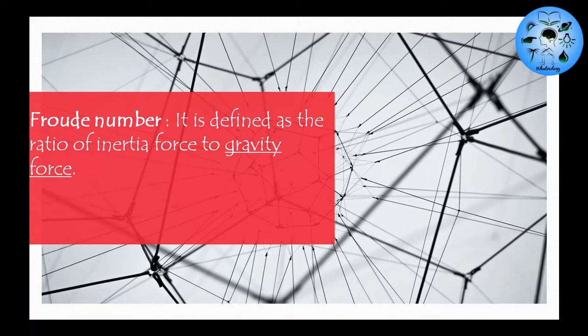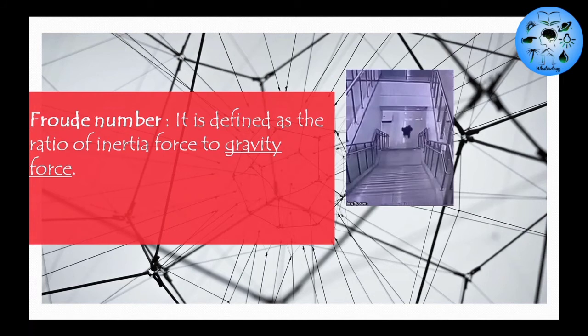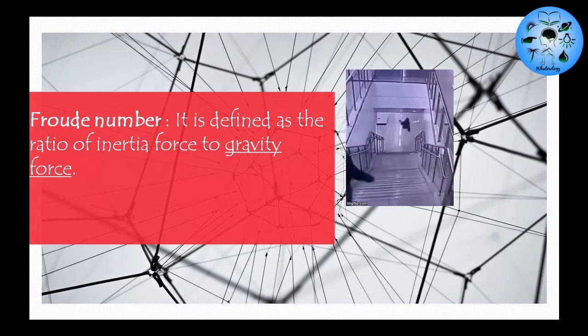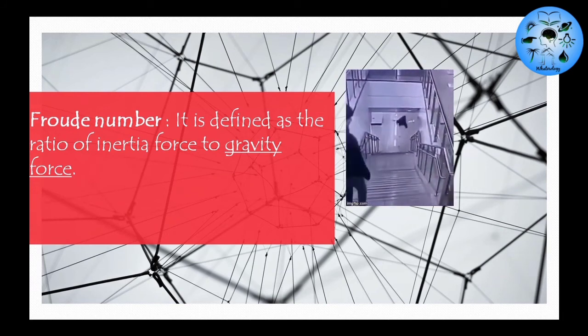Third number in the list is the Froude number. It is defined as the ratio of inertia force to gravity force. A simple trick to remember: if you do fraud or any fraud work, you will fall, as the man in this picture. If you are falling down, the force involved is gravity, so you can remember it like this.